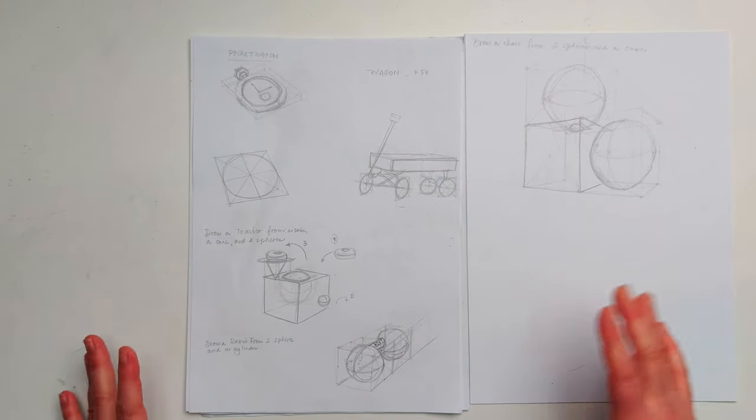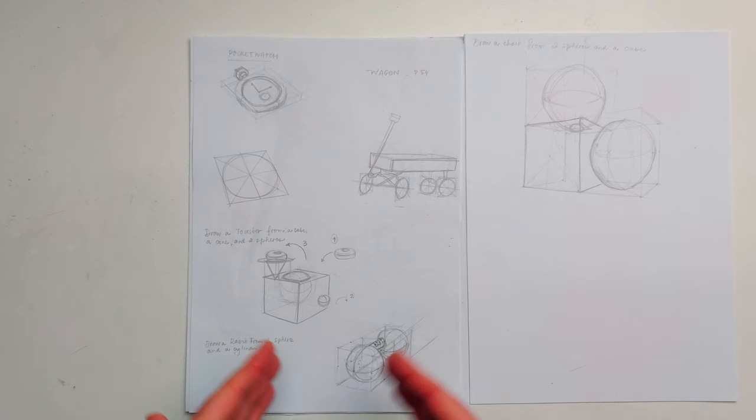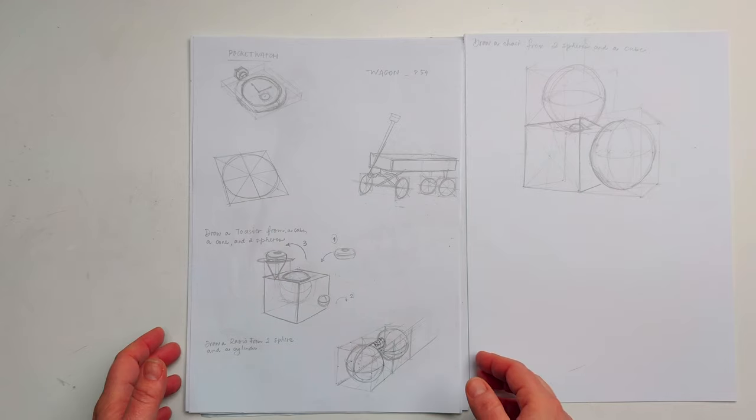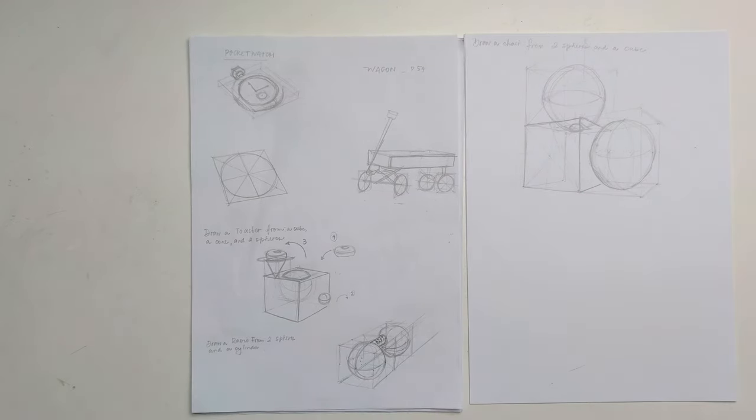I finished this week's work with some exercises that I had skipped earlier from RapidViz, and they had to do with drawing weird objects from specific shapes, like a toaster with a cube, two spheres and a cone, and so on and so forth.